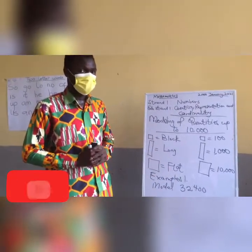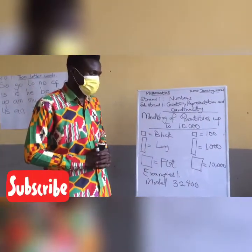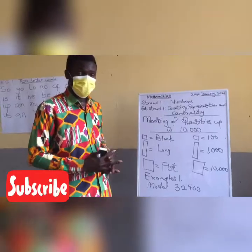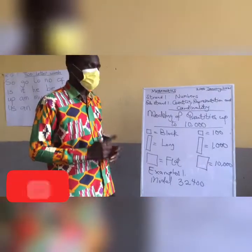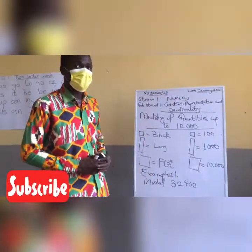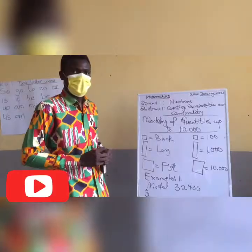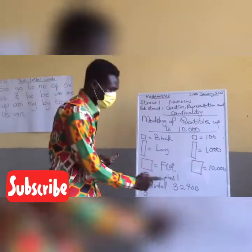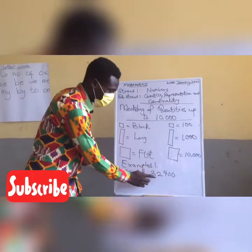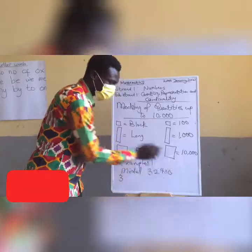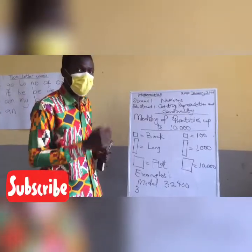To expand any given number, look at the given number: 32,400. The first number from the left is 3. We write the 3, then ask: when we cover the 3, how many numbers are left? We have 1, 2, 3, 4 — four numbers. We replace those with 4 zeros.